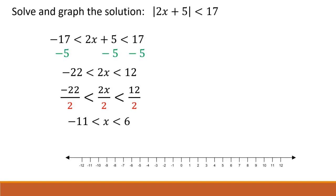In other words, all the numbers that make our inequality true are between negative 11 and positive 6.